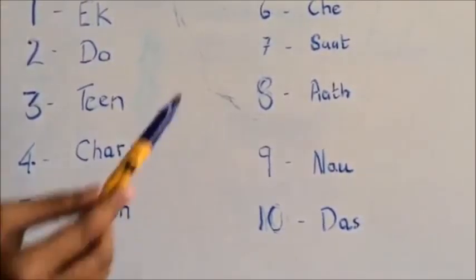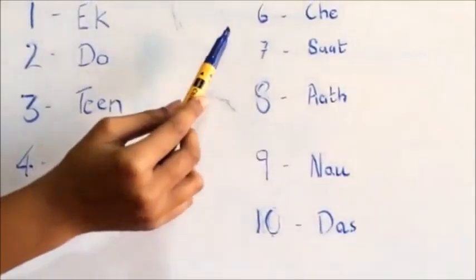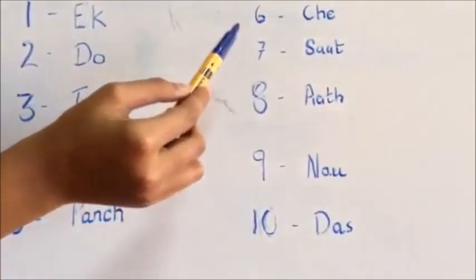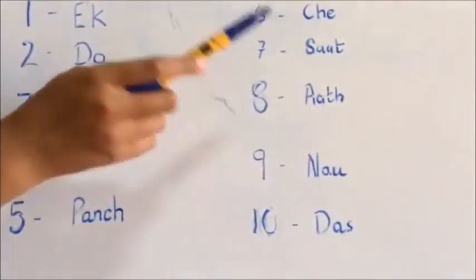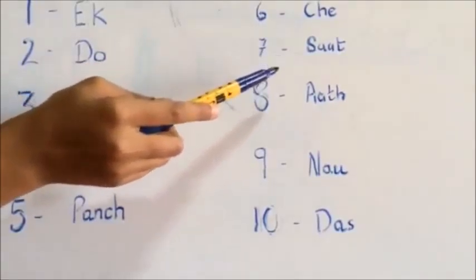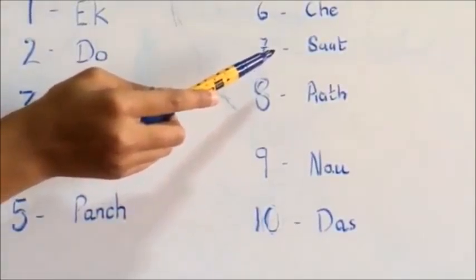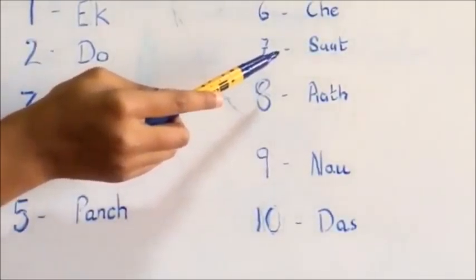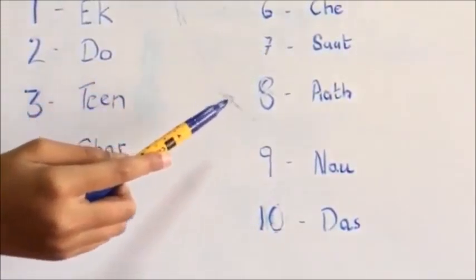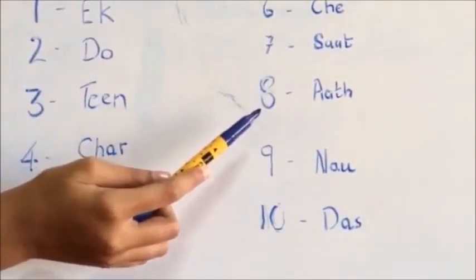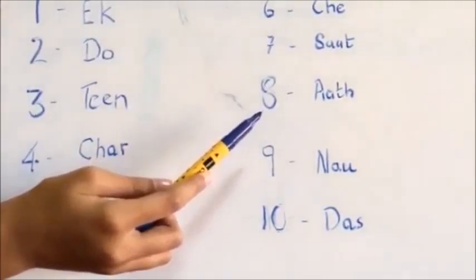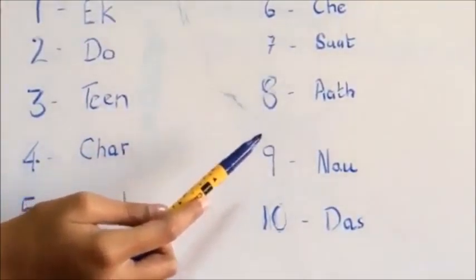For six it's 'che' — C-H-E. For seven it's 'saath' — S-A-A-T-H. For eight it's 'aath' — A-A-T-H.